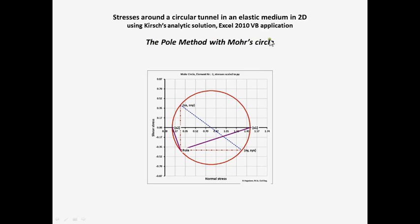The pole method with Mohr's circle is a simple but efficient graphical procedure to find the stresses acting at arbitrarily oriented planes. Mohr's circle is drawn in a coordinate system with the normal stress as abscissa and the shear stress as ordinate. The coordinates of Mohr's circle points represent the normal stress sigma and the shear stress tau acting at planes with different orientations at a point P in the stress field around the tunnel.